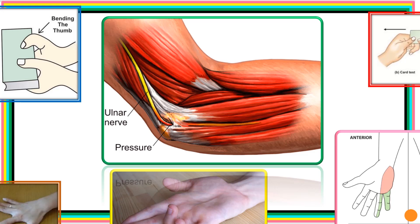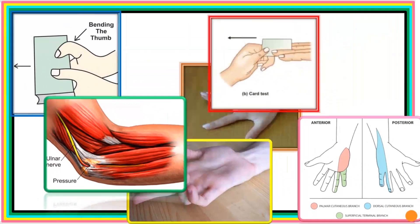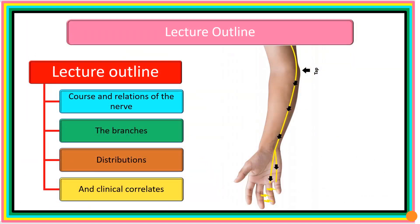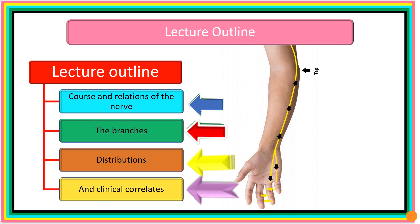We'll be able to explain the boundaries of the cubital tunnel and the effects of compression on the ulnar nerve within it. Our lecture outline covers the course and relations of the nerve in various regions of the upper limb, the branches, the distributions, and finally the clinical correlates.